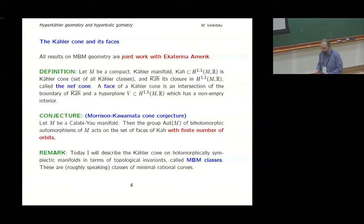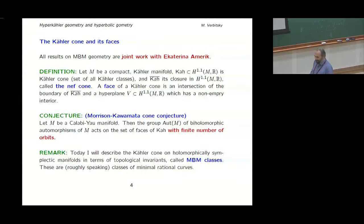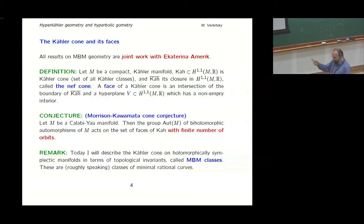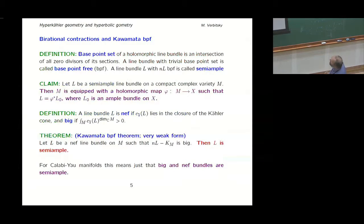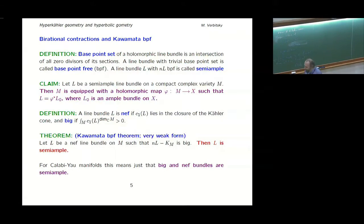The faces correspond to certain cohomology classes which in turn correspond to minimal rational curves. Now let me give the algebraic version, which is simpler because you can state and prove explicitly what happens. It is called the Kawamata base-point-free theorem. I will state it only for Calabi–Yau, which is what I need.